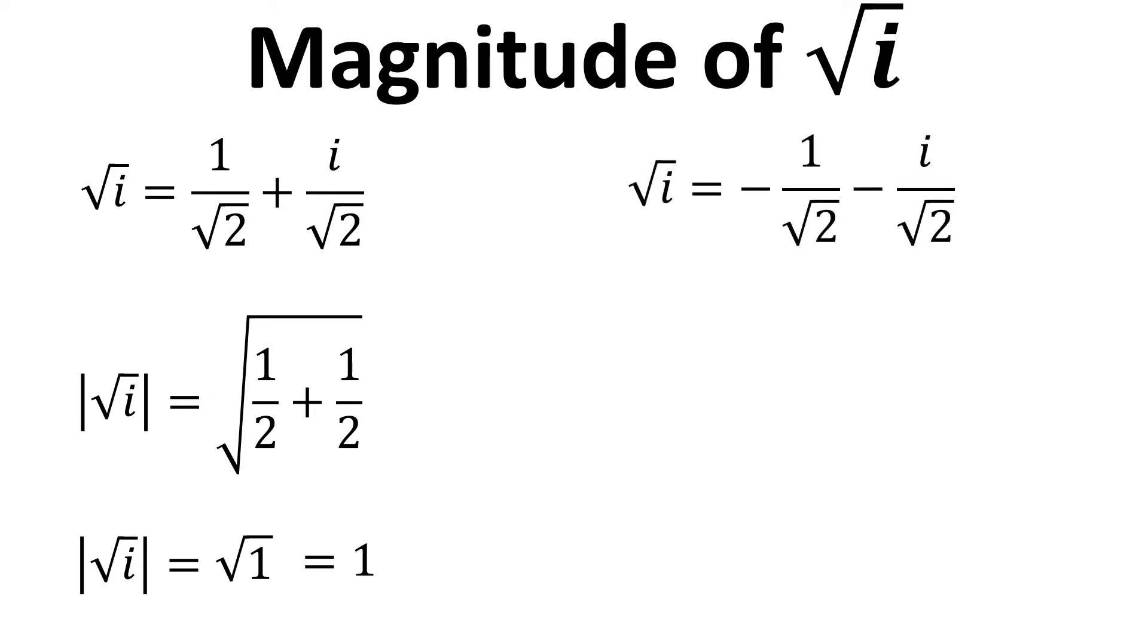That also works for the version that's negative 1 over root 2 minus i over root 2, so again if we go through the same process we get the magnitude equaling 1.